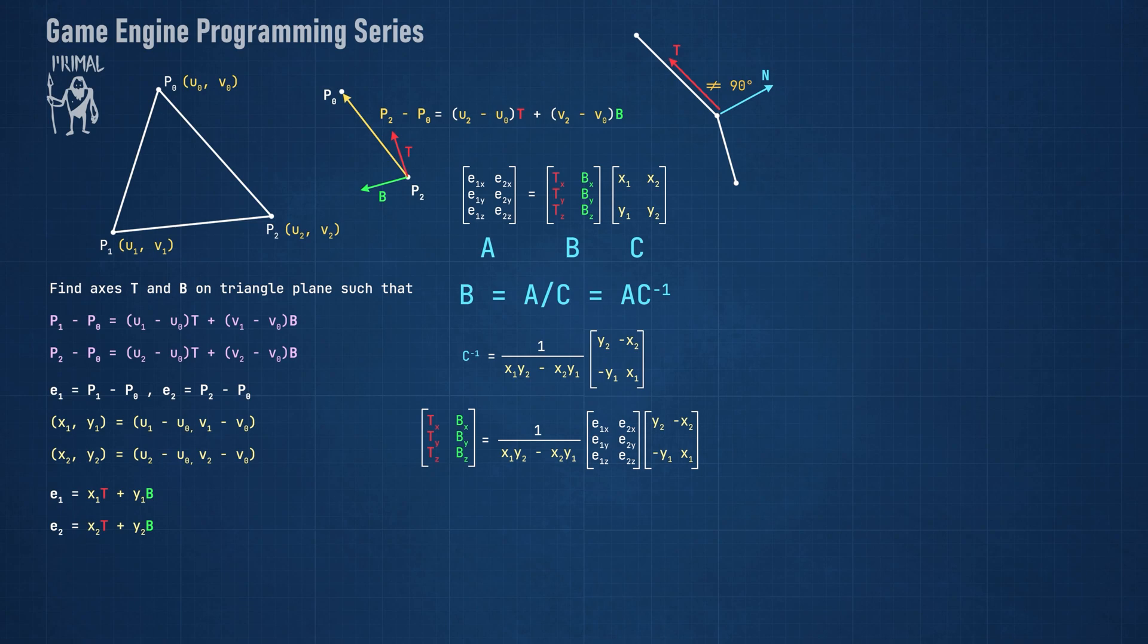We can however nudge them a little in order to make them orthogonal. Suppose we have a unit vector A and another vector V. We can compute the projection of vector V onto vector A. This is the component of V that's parallel to A. We can calculate the rejection of V from A simply by subtracting the parallel part from V. This is the component of V that's perpendicular to A. This procedure is known as the Gram-Schmidt orthogonalization.